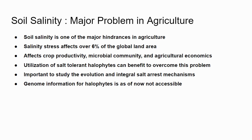It all started with one of the major problems in agriculture: soil salinity. Salinity stress affects over 6% of global land area, and the area is increasing day by day. This problem affects crop productivity, microbial community, and in turn the agriculture economics.